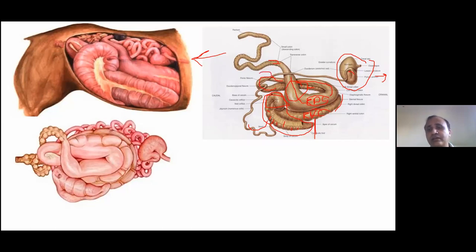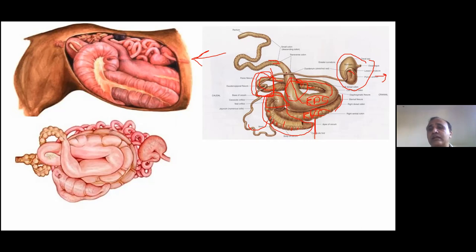The pelvic flexure is a critical anatomical landmark. The left ventral colon has a diameter of approximately 25 to 30 centimeters, and at the level of the pelvic flexure, the diameter immediately reduces to 10 centimeters — a one-third decrease. This makes it the most common site of obstruction. The second common site is the transverse colon, where the diameter decreases from 30 to 35 centimeters to 15 centimeters.